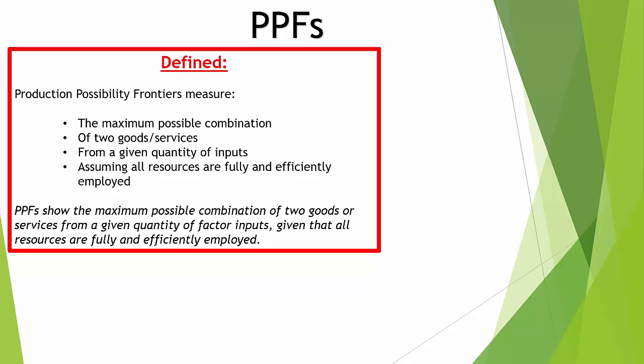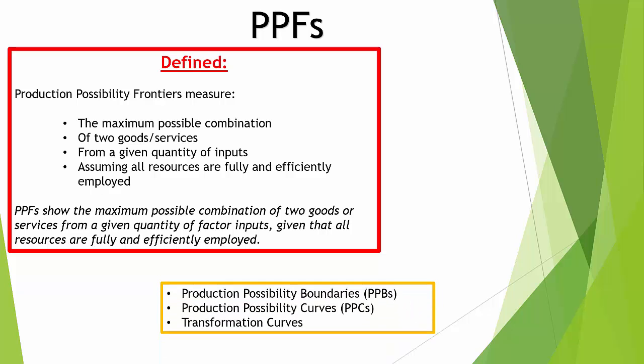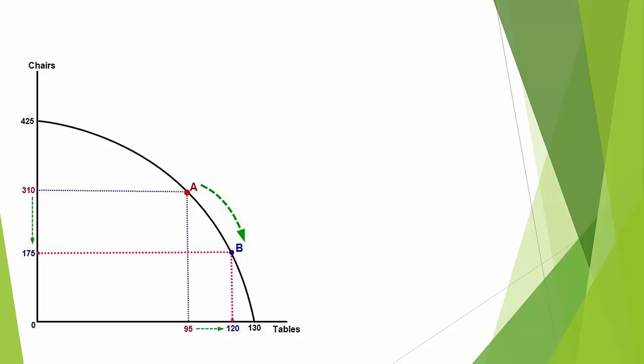There are four things to think about when considering what the PPF actually is and shows. PPFs are sometimes written as Production Possibility Boundaries (PPBs), Production Possibility Curves (PPCs), or transformation curves. This is what a PPF looks like, and we assume that there are only two goods that we can produce with the given quantity of resources.